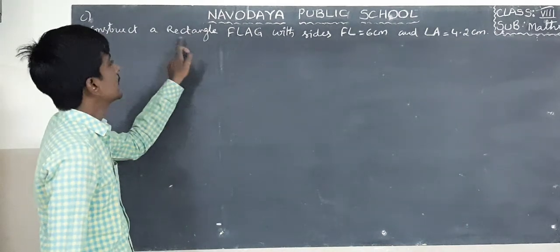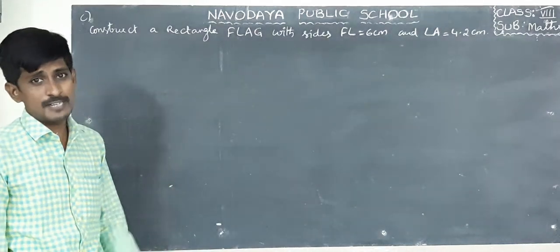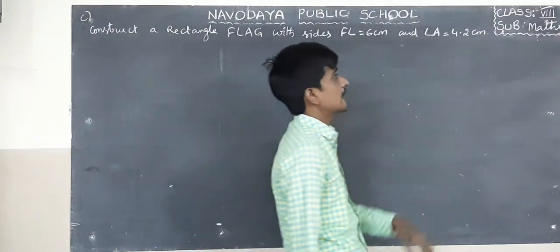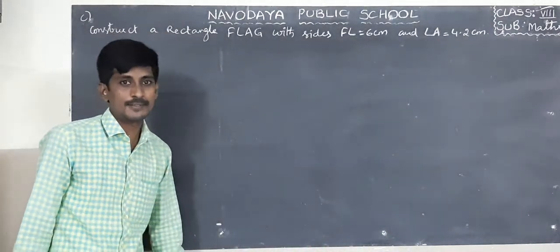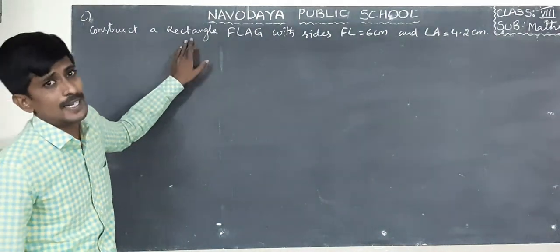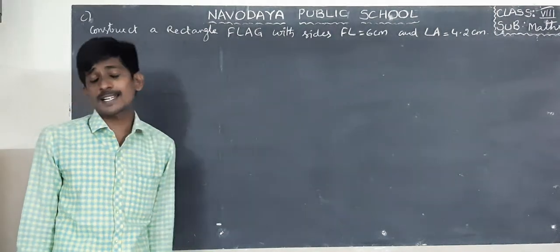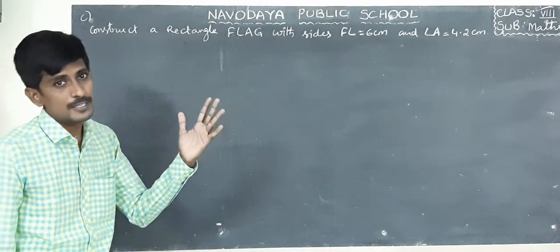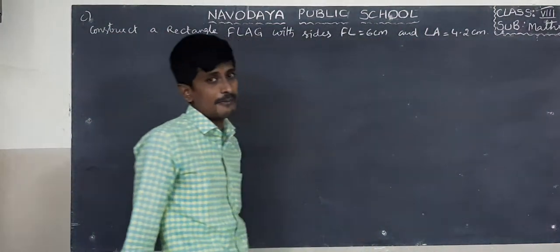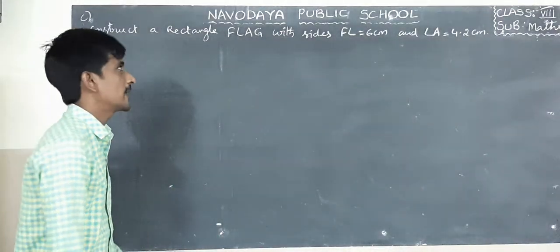If you construct a rectangle, how many measurements are required? Two measurements. FL equals to 6 centimeters is given, LA equals to 4.2 centimeters is given. But a rectangle is a quadrilateral — how many measurements are required to construct a quadrilateral? Five measurements. You know two measurements given. Where are the remaining three? By using properties of rectangle.